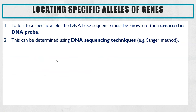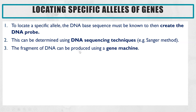The method for this is: first of all you need to know the specific DNA base sequence for the allele that you're screening for. Once that's been identified you can use DNA sequencing techniques such as the Sanger method to determine this, and then use the gene machine so that you can create that DNA fragment. I have got a video on gene machines which I'll link here if you want to find out more.